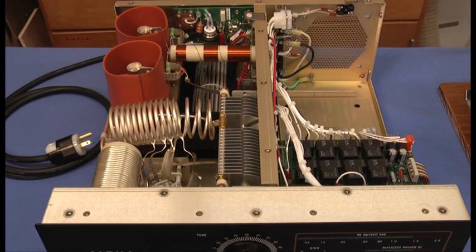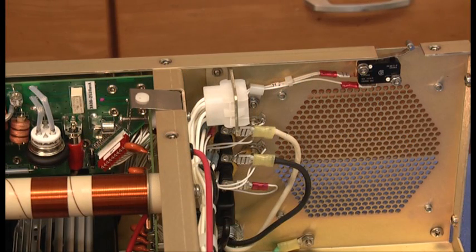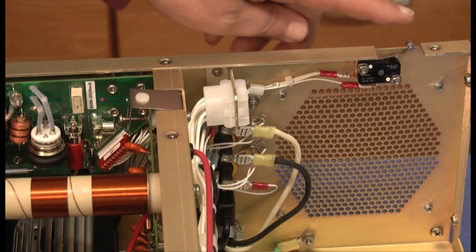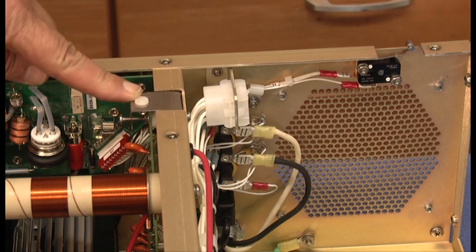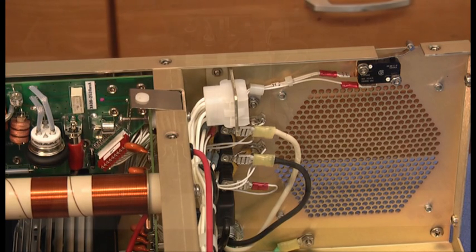First of all, let me say that whenever working on the amplifier with the cover removed, we need to be sure the power's been disconnected by removing the plug from the power main. Safety switches have also been designed in the amplifier. When the cover's removed, a switch will disconnect power to the primary of the transformer, and secondly, a crowbar circuit will short high voltage to the chassis.